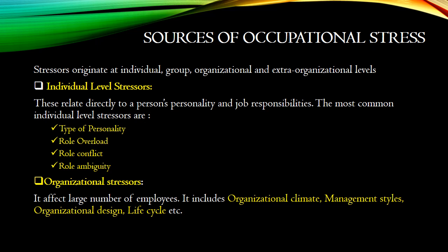Next is role ambiguity at the individual level. It exists when employees are uncertain about their responsibilities, functions, performance expectations, and level of authority. This tends to occur when people enter new situations, such as joining the organization or taking foreign assignments, because they are uncertain about task and social expectations. This is about individual level stresses.